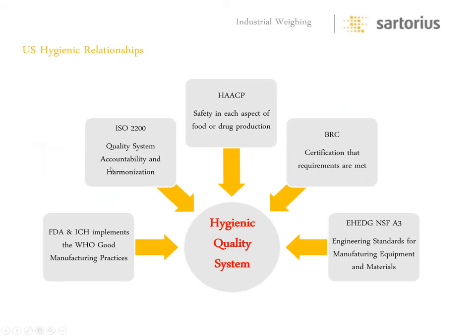Here's the relationship of all these organizations. You have the FDA and ICH implementing the World Health Organization's Good Manufacturing Processes. You have ISO 22000 managing the quality system for accountability. You have HACCP managing safety. You have BRC certifying that all of these are met. And then EHEDGE, NSF, and 3A creating engineering standards that equipment must conform to.